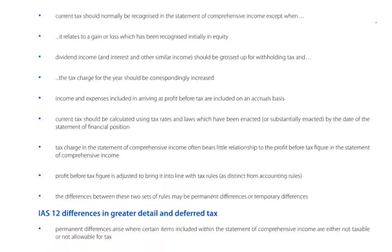Current tax should normally be charged and recognized in the Statement of Comprehensive Income, except if it relates to a gain or loss which has previously been recognized in equity. Dividend income, interest, and other similar income should be grossed up for withholding tax, but that also means the tax charge should be increased by the same amount. Income and expenses included in arriving at Profit Before Tax are on an accruals basis, but the tax plan often works on a cash basis. So current tax should be calculated using tax rates and laws which have been enacted or substantially enacted by the date of the Statement of Financial Position.